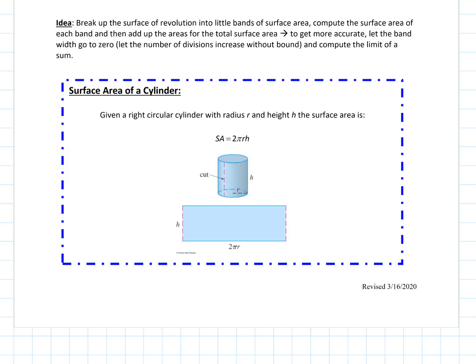Two quick formulas we're going to use through this proof, just from geometry: the lateral surface area of a cylinder — just the band part, not the top and bottom. Given a right circular cylinder with radius r and height h, the surface area is 2πr — the circumference — times the height.